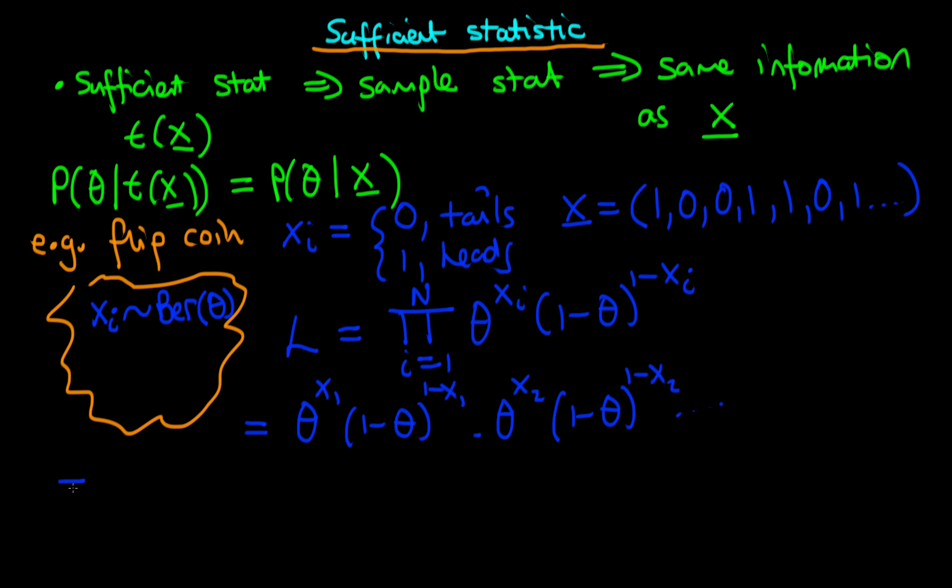So then if we do that, we just get theta to the power, we're going to have x1 plus x2, because like exponents, the powers are just going to add. And then we're going to get x1 plus x2 all the way up to xn. And then we're going to get 1 minus theta to the power 1 minus x1 plus 1 minus x2, etc.